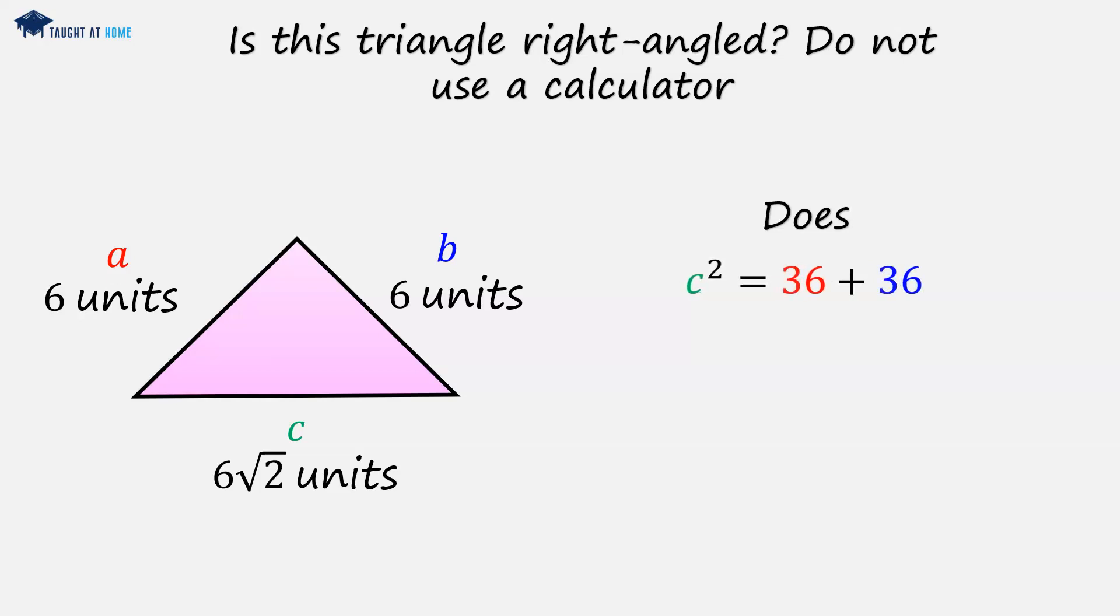So that's 36 plus 36, which is 72, taking the square root of 72 to get c. And now we can simplify this. So we can split 72 into 36 times 2, which is the root of 36 times the root of 2, root 36 is 6. So we have 6 root 2 units.